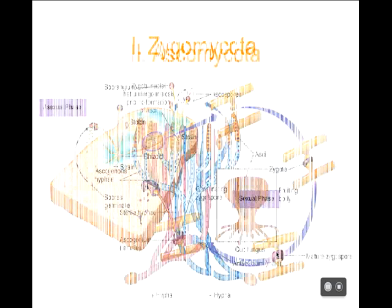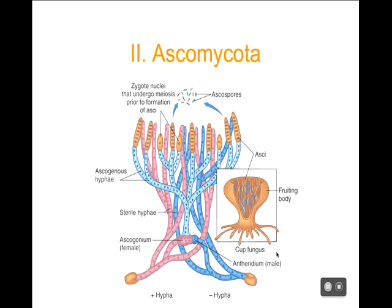The next division is Ascomycota. All fungi in this division form what are called ascospores as their sexual spore. Two individuals — the plus strain and the minus strain — come together and send up a little piece of hyphae with a sac, and inside the sac are the ascospores containing DNA from both organisms. Some Ascomycota form sporangiospores for asexual reproduction; some form conidia. But all form ascospores as their sexual spore — that's what makes them Ascomycota.